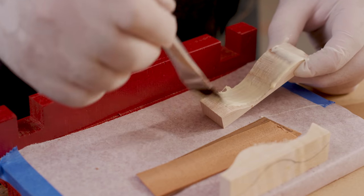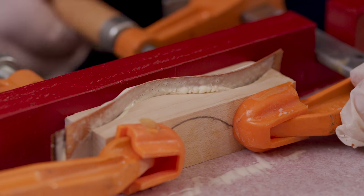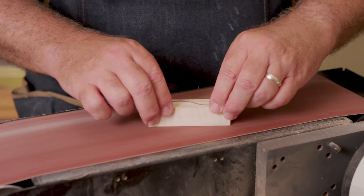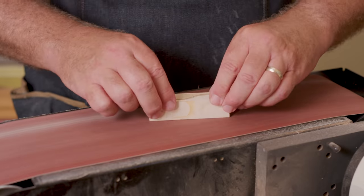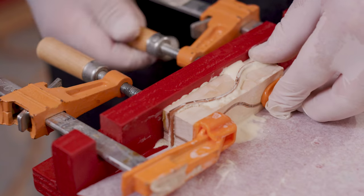Apply adhesive to the mating surfaces and clamp the pieces together, keeping the bottom surfaces flush. After the adhesive dries, sand the laminated surface flush. Glue and clamp strips in place like done for the first curve.